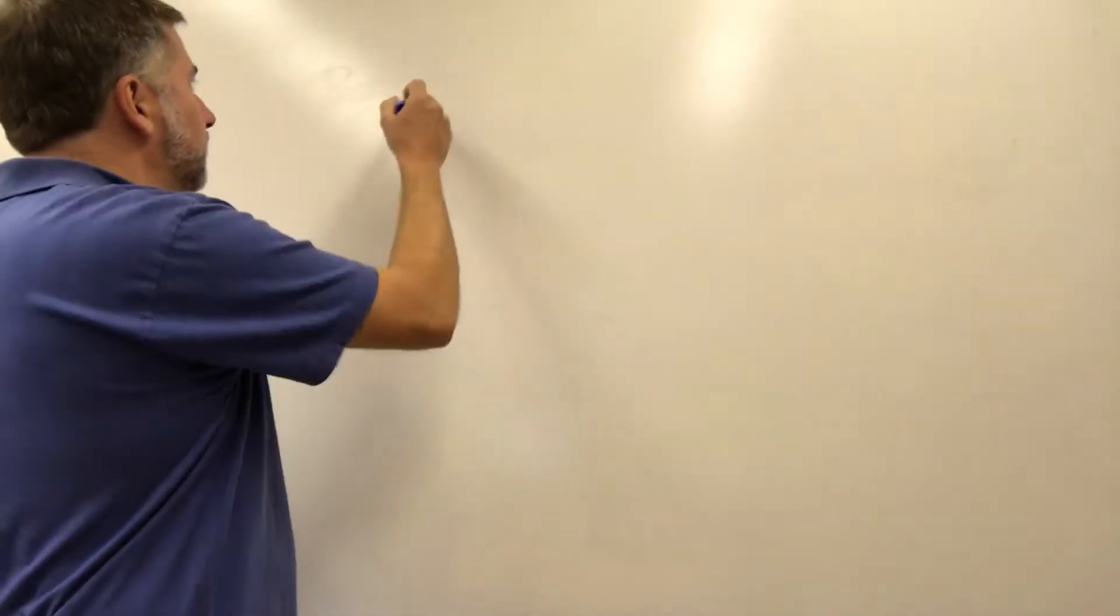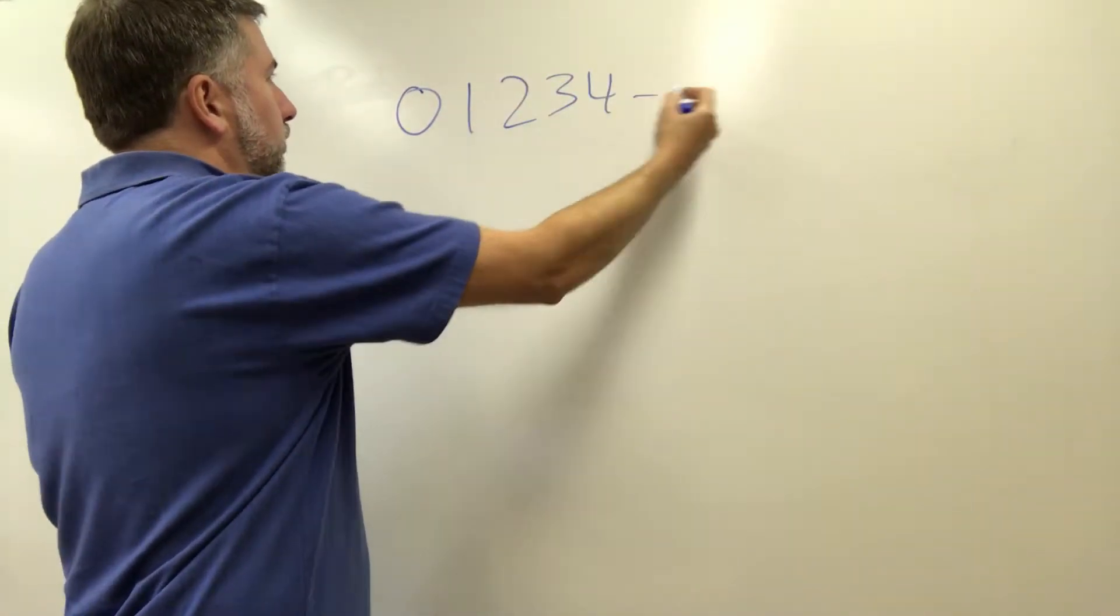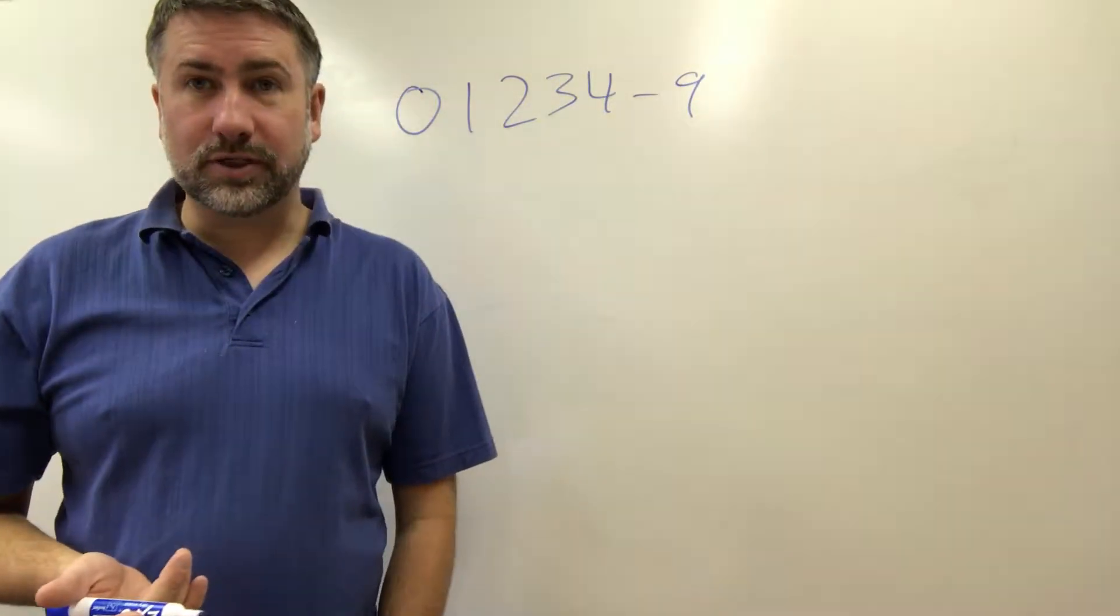So this is in contrast to base ten mathematics where we have ten symbols. Zero, one, two, three, four, five, six, all the way up to nine. And with ten symbols there's lots of different things you can do.